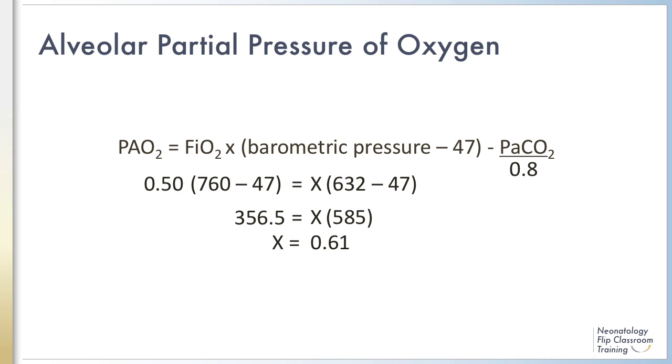And on the other side, we have X, which is the new FIO2 that we're solving for in Denver, times the atmospheric pressure in Denver minus 47. So on the left, we have 356.5 equals X times 585.